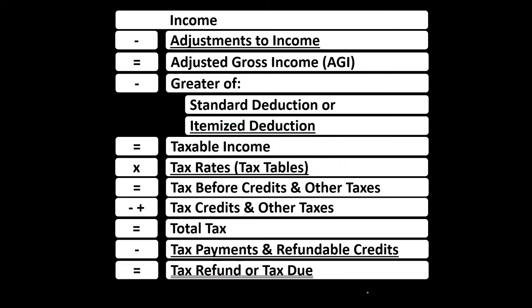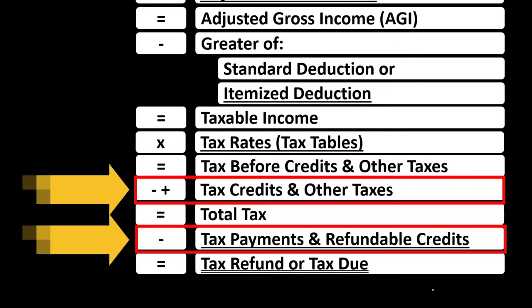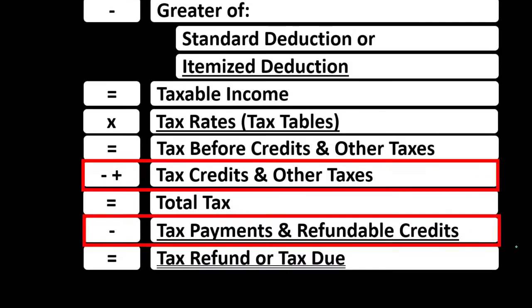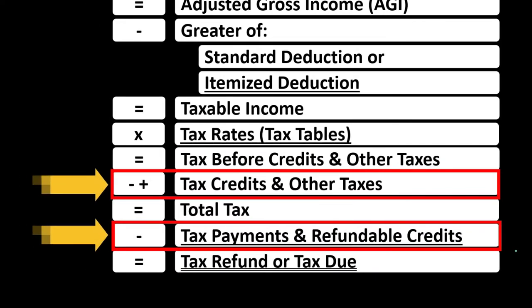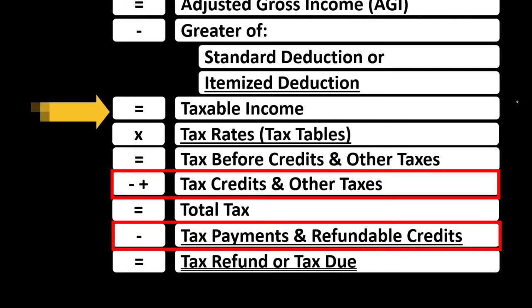Looking at the income tax formula, down in the bottom half in the credit area, noting that both credits and deductions are good. But if you had a dollar credit versus a dollar deduction, the credit would typically be better — you get the full amount of the dollar as a benefit, as opposed to the dollar deduction, which would be a decrease to the taxable income, the tax then calculated upon it.